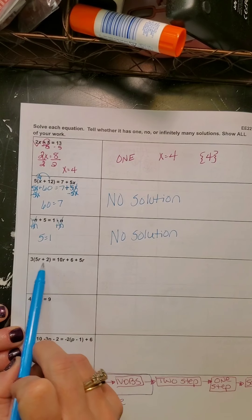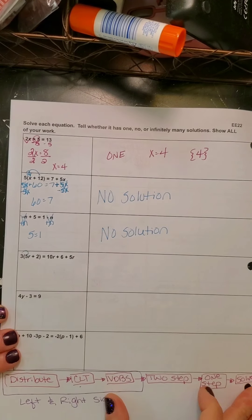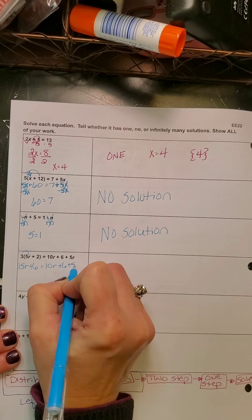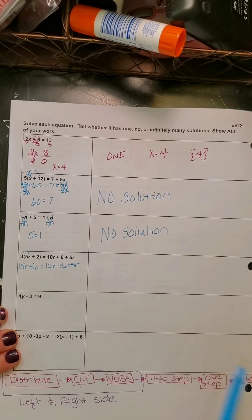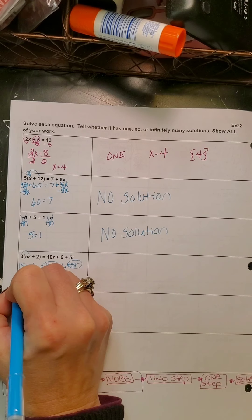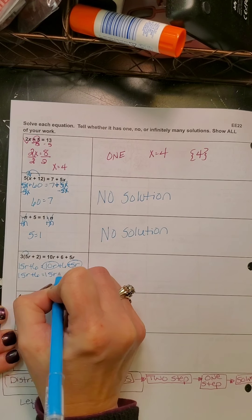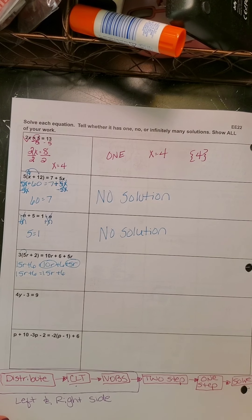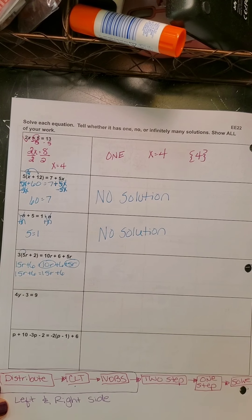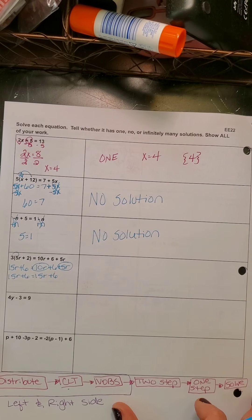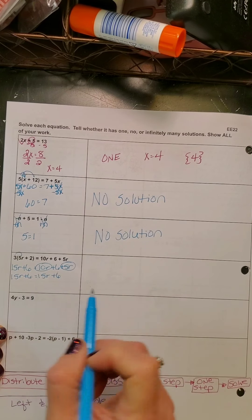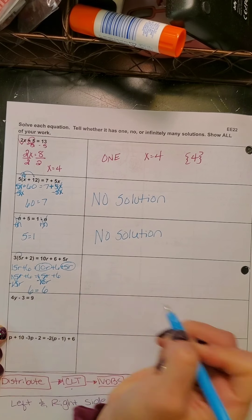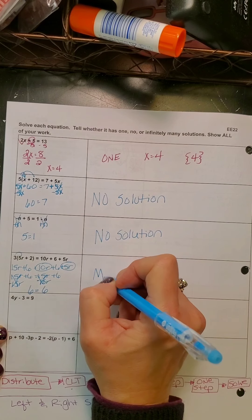I have distributive property on the left, so I need to distribute: 15R + 6 = 10R + 6 + 5R. I don't have combining like terms on the left, but I do on the right. Combining those: 15R + 6 = 15R + 6. Right there I can tell you I have many solutions because I have twins. Subtracting 15R from both sides gives 6 = 6 — still twins — which tells me I have many solutions.